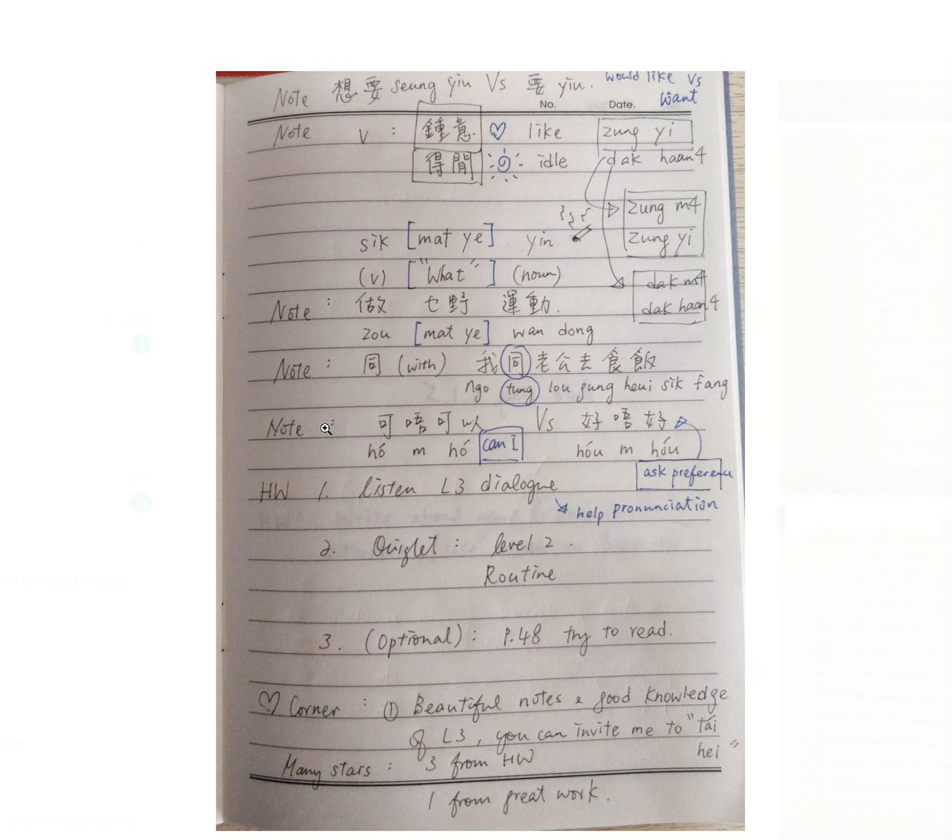可唔可以唔好食煙啊, so yeah, just making a random sentence. 可唔可以唔好 - do something that you don't like, 可唔可以唔好.